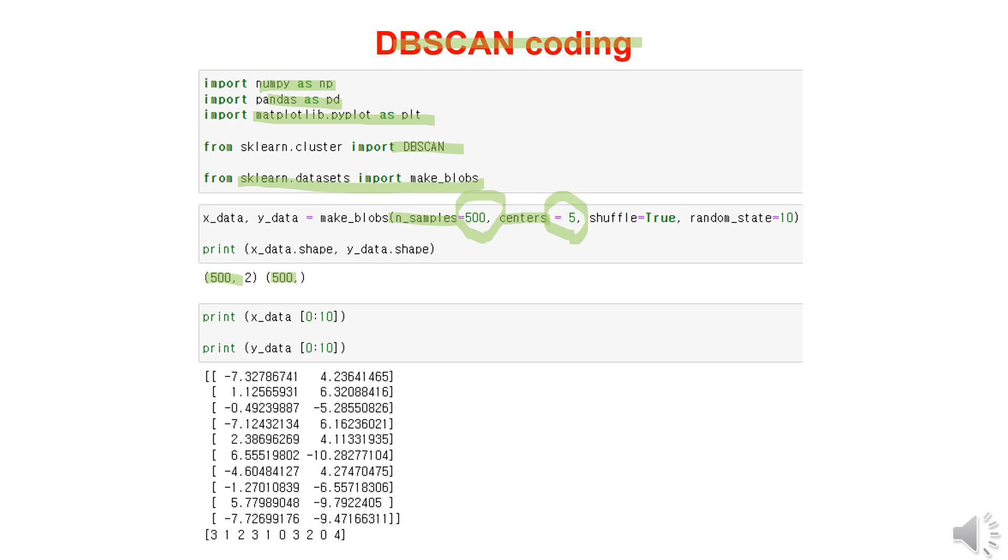Consequently, we'll have a total of 500 data points, with 100 points for each cluster. If we print the X and Y data for the first 10 points, we can observe the coordinates and the labels indicating which of the clusters, 0, 1, 2, 3, or 4, each point belongs to.